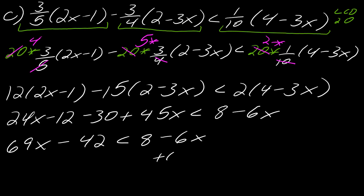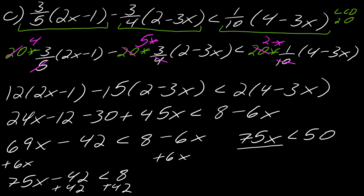And then, let's see, I'll go ahead and add the 6x to this side. So now I've got 75x - 42 is less than 8. So now I'll go ahead and add the 42 to each side. So I've got 75x is less than 50. So this time, my answer will actually end up being a fraction. So 50 over 75 will simplify to 2/3. So there's my answer.